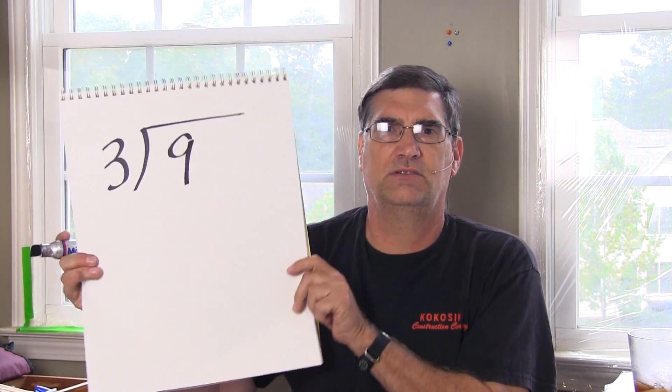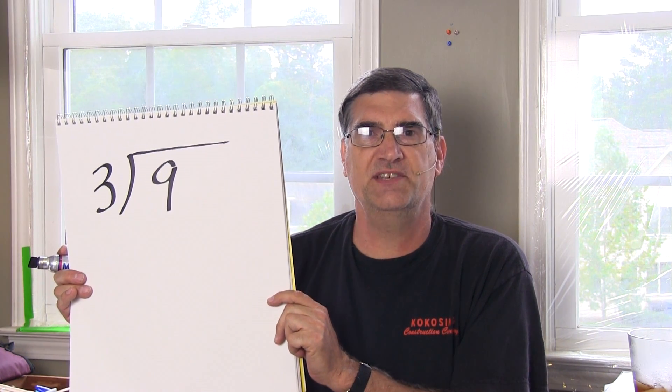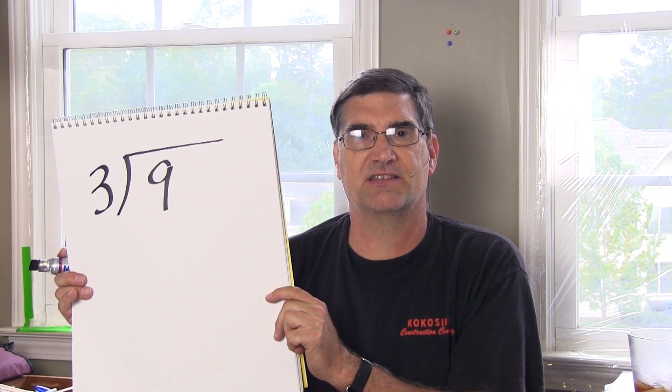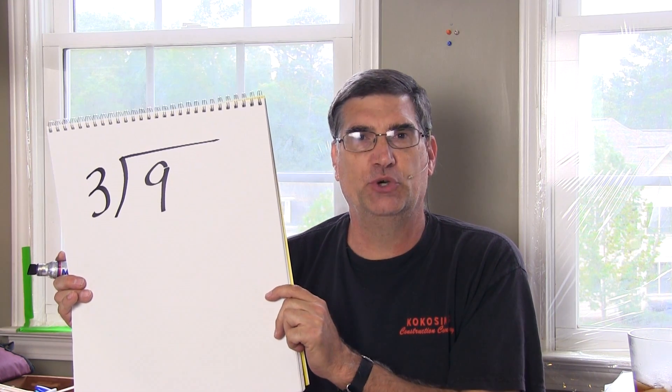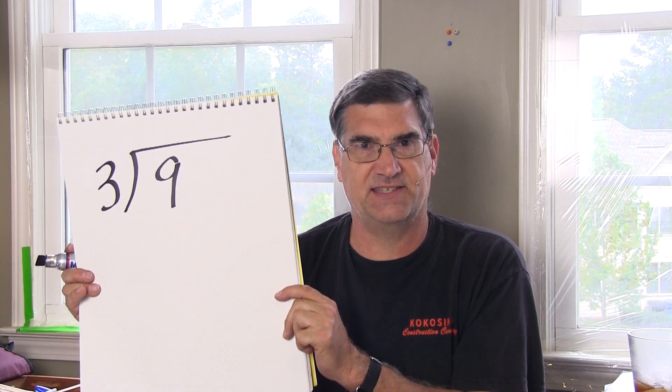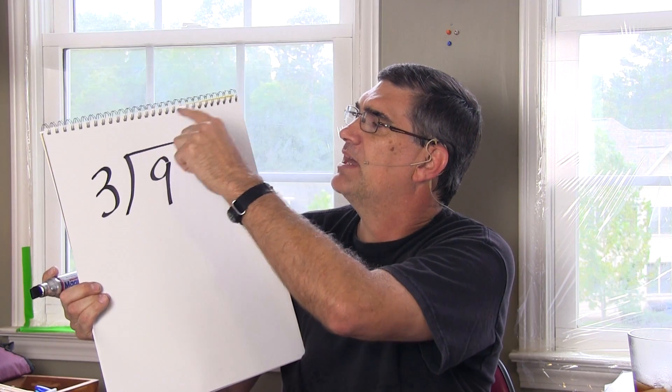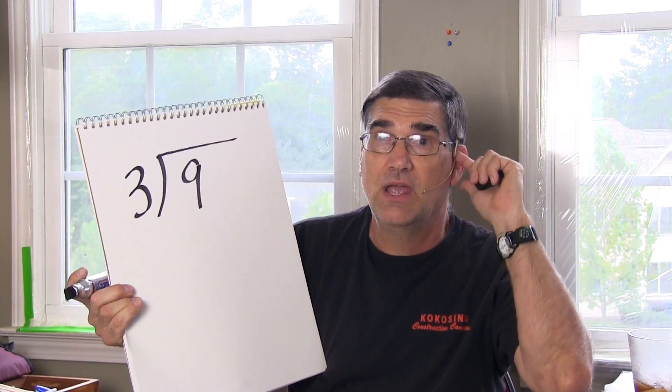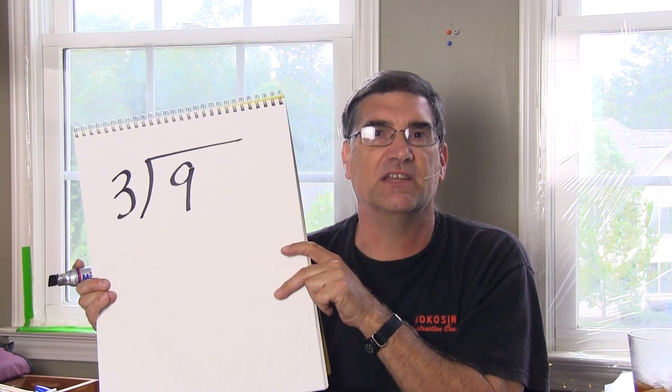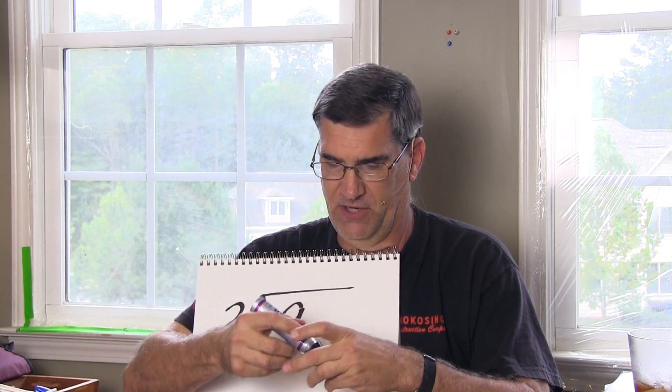When kids are taught division, they start with something like this. And the reason they do that is because this makes the mechanics of doing the division easy, because you can say three goes into nine three times and then blah, blah, blah. So you can subtract and it's very convenient. It's a convenient way to do long division.